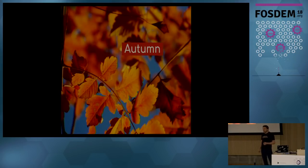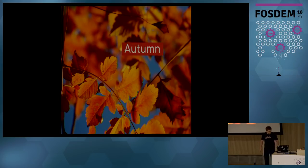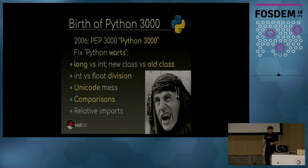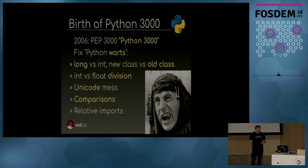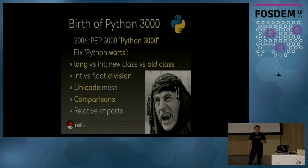I decided to group my slides into four seasons, so the ten years will be in four seasons, and we will start with Autumn. The birth of Python 3000 — because at the beginning it was called 3000 and not Python 3 — was in 2006 with the PEP called Python 3000. At this time, some people started to complain about design issues of the Python language, which were called warts.